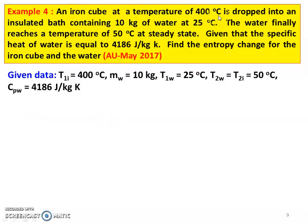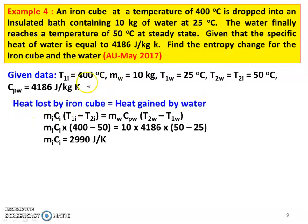The iron cube at 400 degree Celsius is placed into the insulated bath containing 10 kg of water at 25 degree Celsius, and the final temperature is 50 degree Celsius. Using the principle that heat lost by iron cube equals heat gained by water: MI·CI·(T1I minus T2I) equals MW·CPW·(T2W minus T1W). Substituting: MI·CI into (400 minus 50) equals 10 into 4186 into (50 minus 25), giving MI·CI equals 2990 joules per Kelvin.